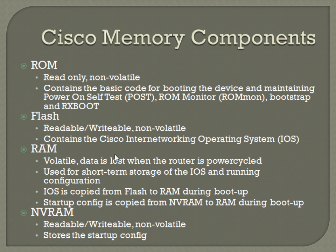Flash is readable, writable, and non-volatile. This is usually where the Cisco IOS is located — the operating system the Cisco platform is running on. You can read it and write to it to upgrade the IOS, and if you power off the device you won't lose what's in flash. RAM is volatile — data is lost when the router power cycles. RAM is used for short-term storage of the IOS and the running configuration.